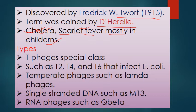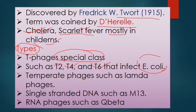Types of bacteriophages: a special class is the virulent phages such as T2, T4, and T6, which mostly infect E. coli. Then there are temperate bacteriophages, also known as lambda phage. There are also bacteriophages with single-stranded DNA, such as M13 bacteriophage, which are used as cloning vectors in biotechnology. Finally, there are RNA phages such as Qβ.